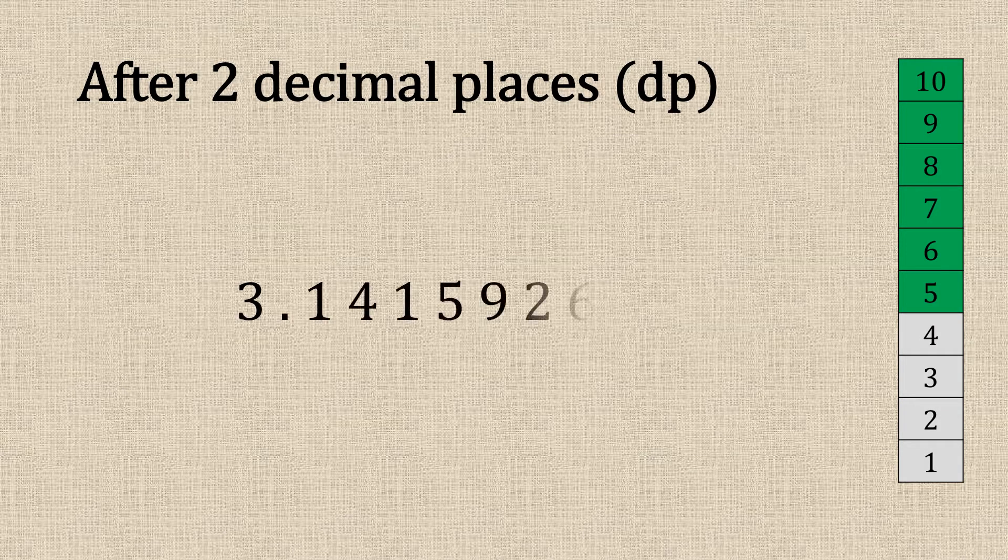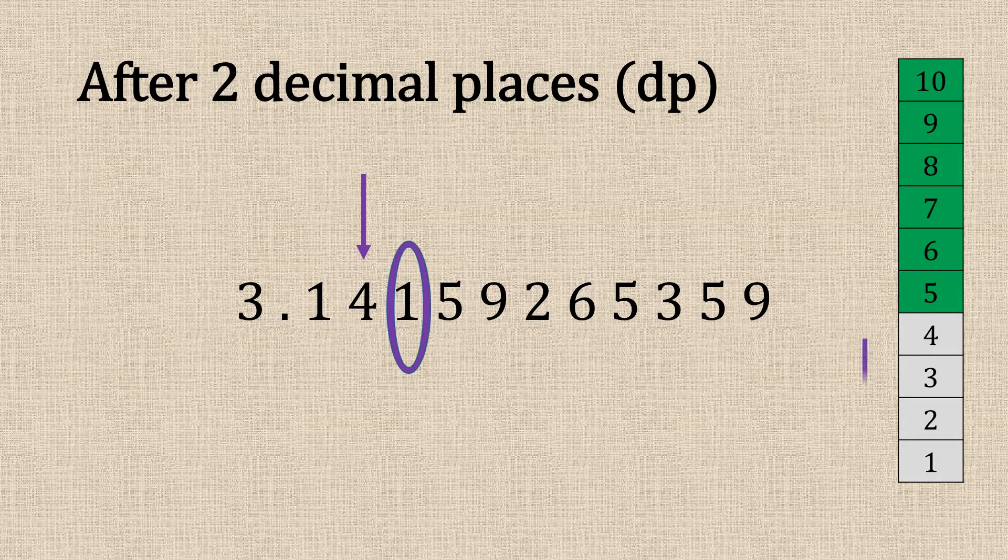Now we're going to look at two decimal places. Number four is our second figure and the neighbour is one. So we're going to leave that alone. Do not round.